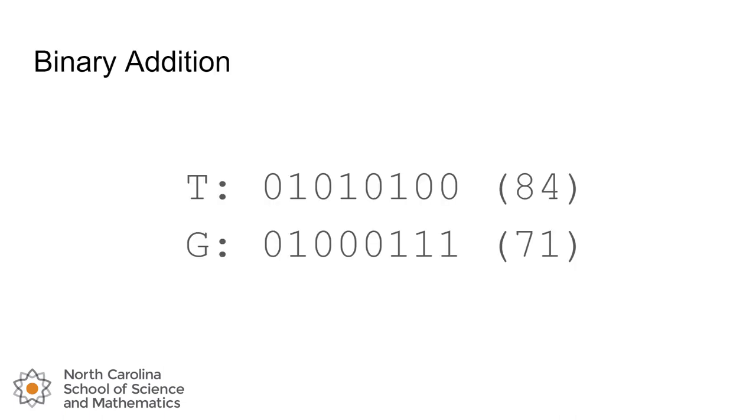So the first one we're going to look at is binary addition. It's just adding the same two numbers that we always know how to do, but we need a different algorithm to do that with binary as opposed to the one that we're used to doing with decimal numbers. So we're going to look at the characters capital T and capital G, and there's their 8-bit ASCII representation.